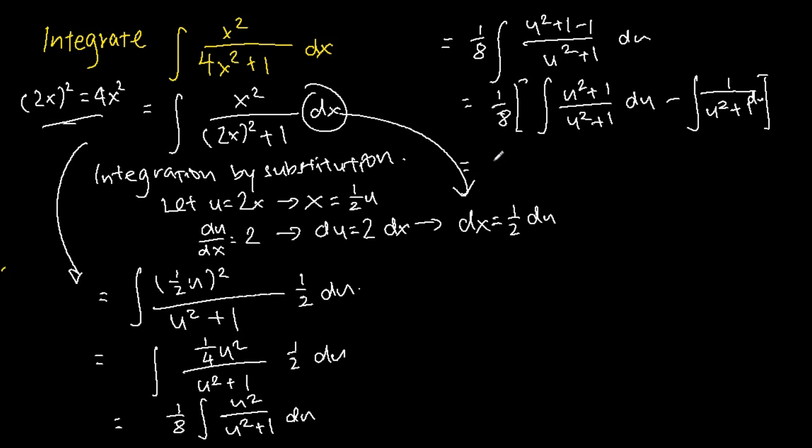And we can now work out the integral. So for the first integral, basically it's just the integral of 1, which is u. For the second integral, it's the integral of 1 over u squared plus 1 du. So this gives us tangent inverse absolute u plus c.